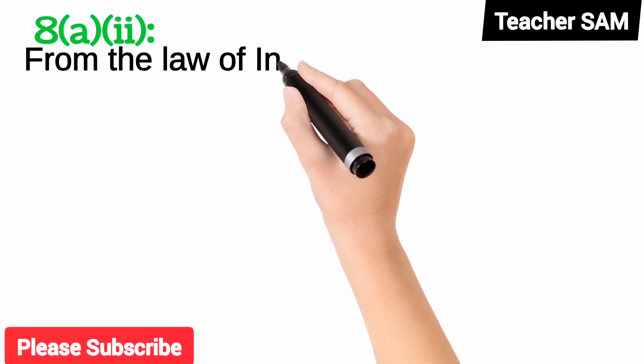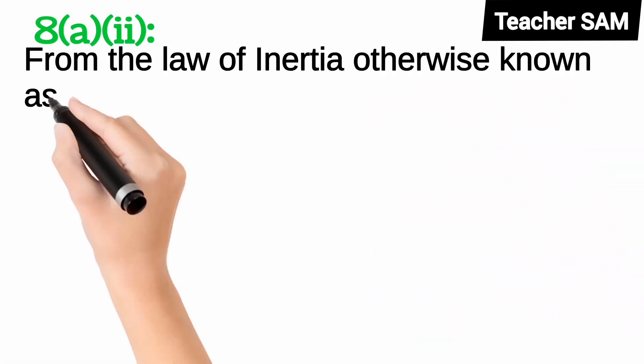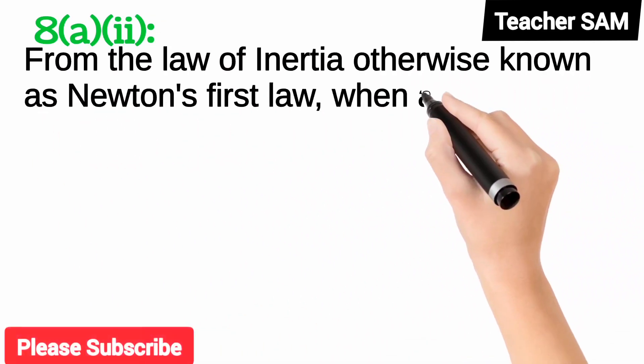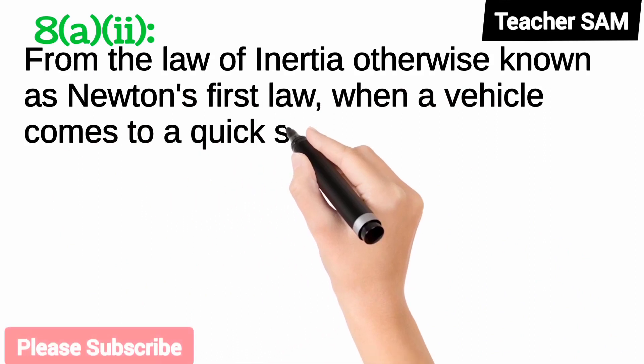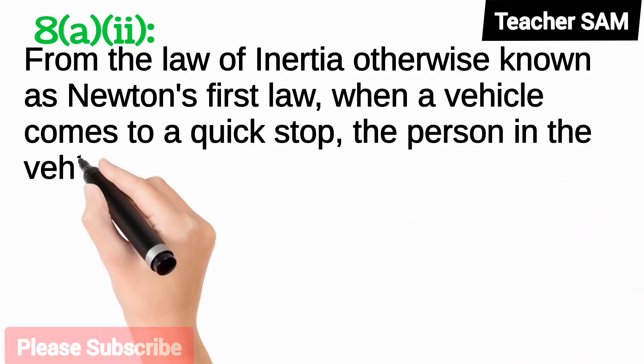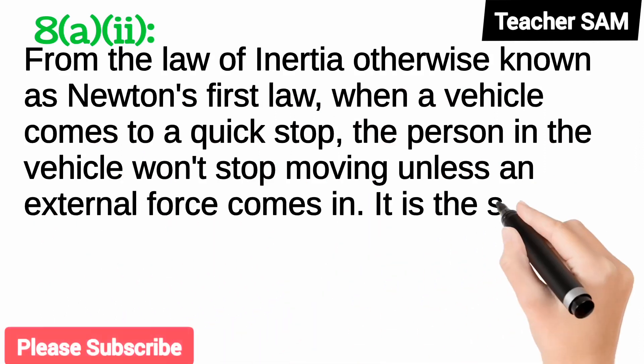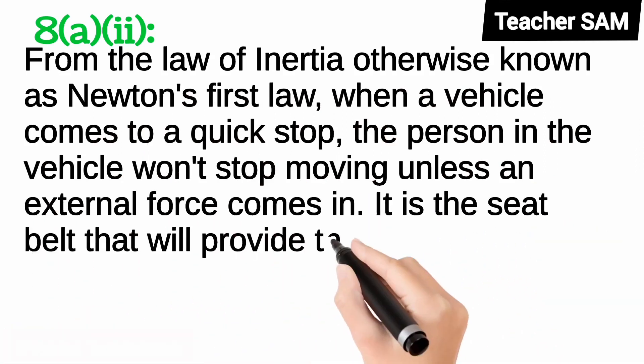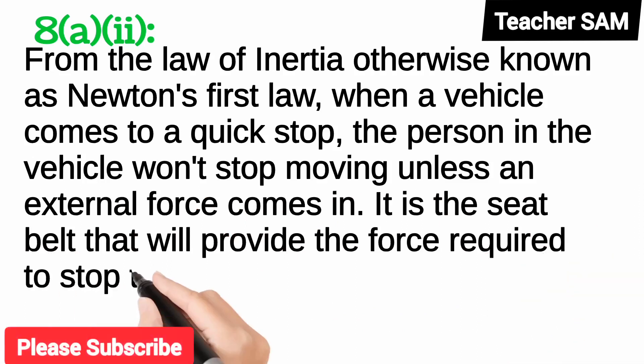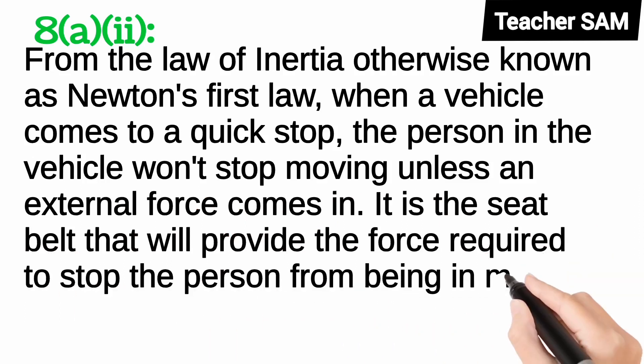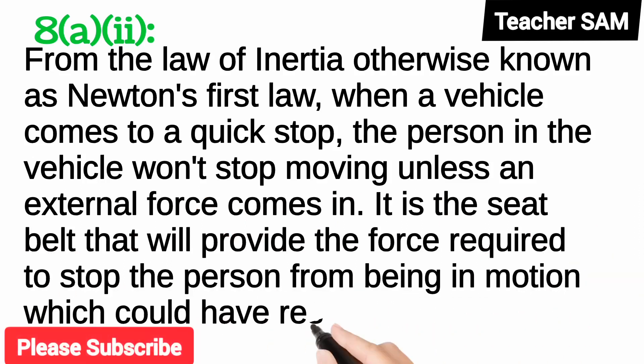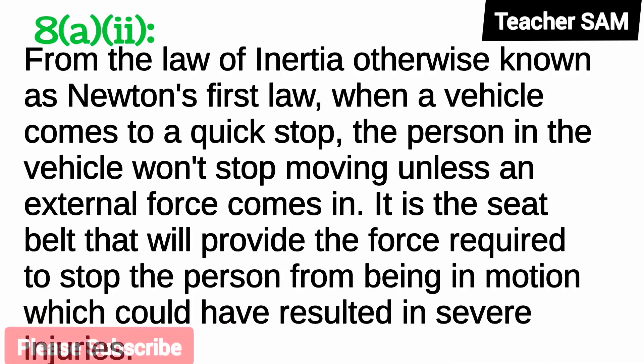8(a)(ii): From the law of inertia, otherwise known as Newton's first law, when a vehicle comes to a quick stop, the person in the vehicle won't stop moving unless an external force comes in. It is the seat belt that will provide the force required to stop the person from being in motion, which could have resulted in severe injuries.